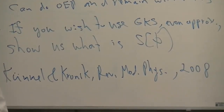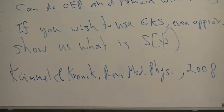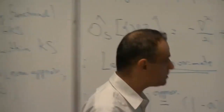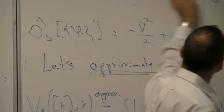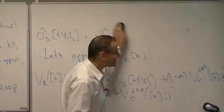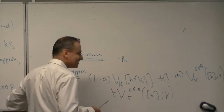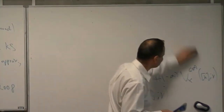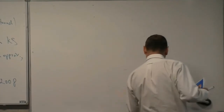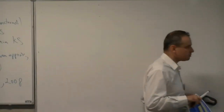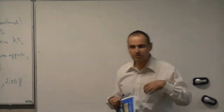That concludes what I have to say about the generalized Kohn-Sham equation. Some further discussion of OEP and its similarities and differences with GKS can be found in a review article written about ten years ago. The rest of this discussion was to be dedicated to the derivative discontinuity, but given time constraints I'll just make a few quick notes.